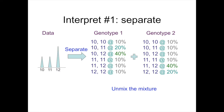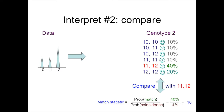This separation unmixes the DNA mixture. The second step is to compare a separated genotype at a genetic locus with a known reference standard. Here, 11-12 is the standard, selecting from the list the 11-12 entry with 40% probability for the second genotype. A match statistic is the ratio of the probability of this specific match with the evidence divided by the probability of coincidence — here, 40% in the numerator divided by 4% in the denominator, giving a match statistic of 10 at this locus.